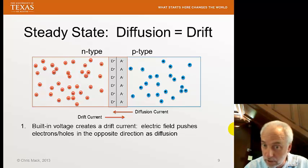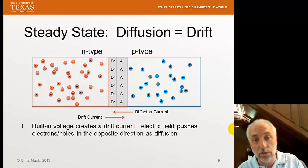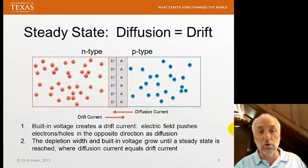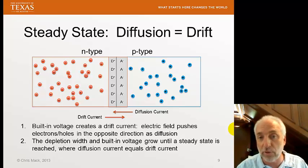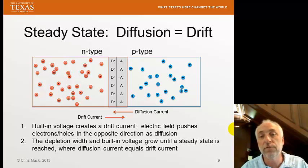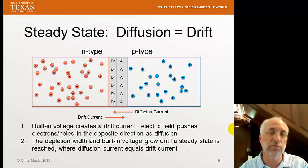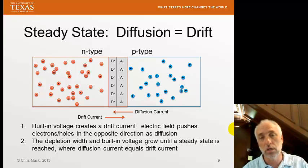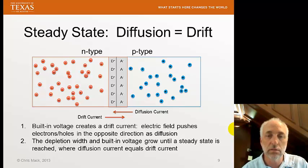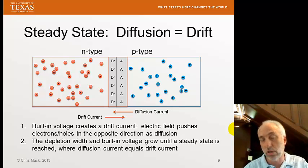Diffusion keeps going, causing more recombination, so the depletion width gets wider and the built-in voltage grows. As the built-in voltage grows, the drift current grows with it — drift current is directly proportional to the built-in voltage. Eventually a steady state is reached where the diffusion current equals the drift current. There's still diffusion occurring, but the drift current balances it, giving a stable depletion width and built-in voltage across the junction.